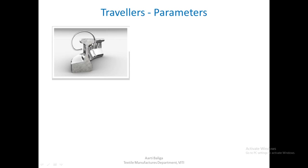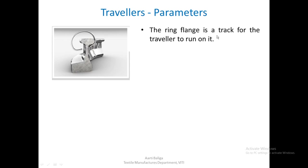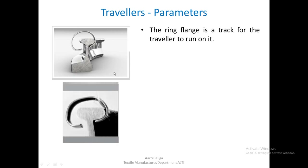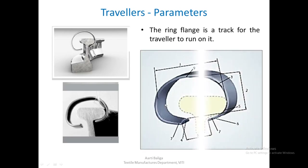Now let us look at the traveler parameters. This is the ring seen as a cross section, and on this there is a small clip-like element known as a traveler. The ring flange is a track for the traveler to run on. On this flange the traveler would be running, and the yarn would be running in between the ring surface, the flange, and the traveler.